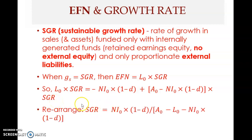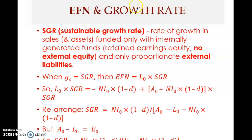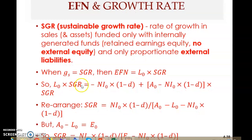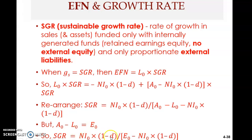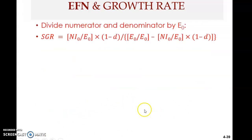We rearrange to express the equation in terms of SGR. The key difference from IGR is that IGR had no liabilities term. In the formula, assets minus liabilities equals equity, so we replace that difference with equity E₀ — the equity level at time zero. Then we divide numerator and denominator by E₀.